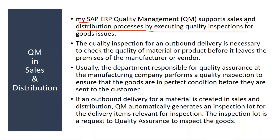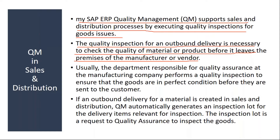Sometimes in some industries the quality inspection for an outbound delivery is necessary to check the quality of the material or product before it leaves the premises of the manufacturer. Even though product quality is inspected at regular intervals during the production activity or immediately after completion of production, still sometimes in some industries the customer asks for quality inspection of the material just before delivery. Some customers expect this.